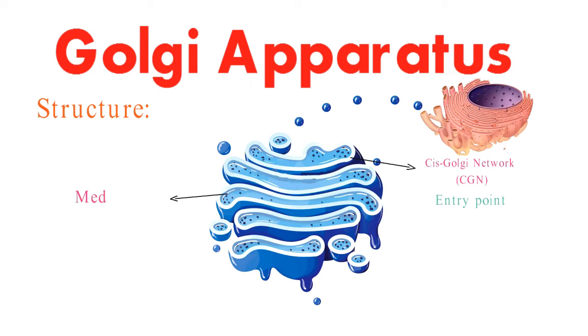The second part is the Medial Golgi. Situated in the middle of the stack, this section modifies and sorts proteins and lipids it receives from the CGN.